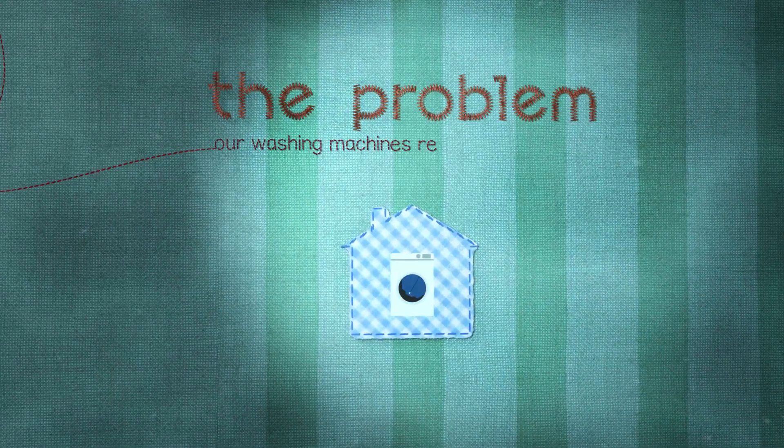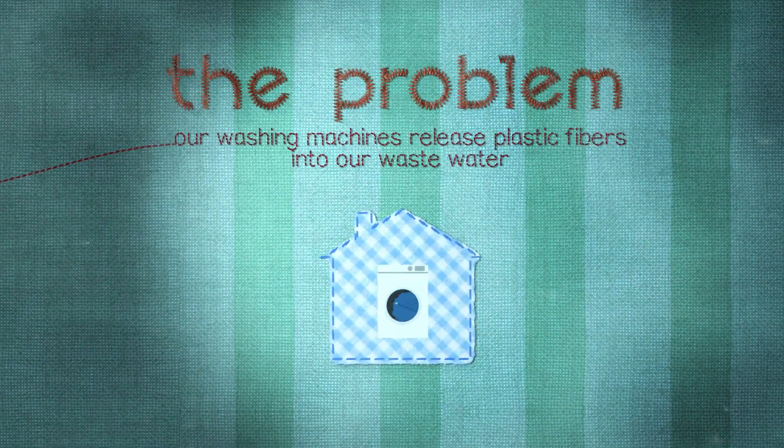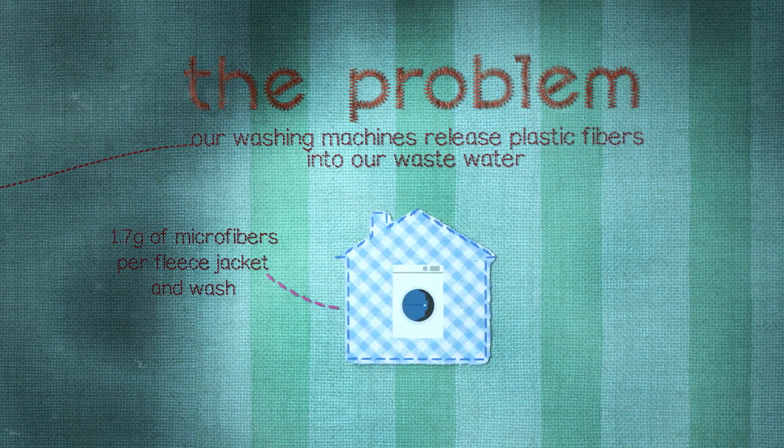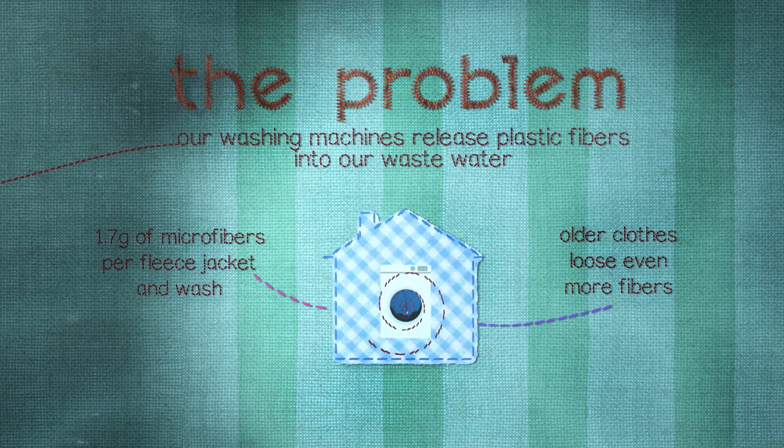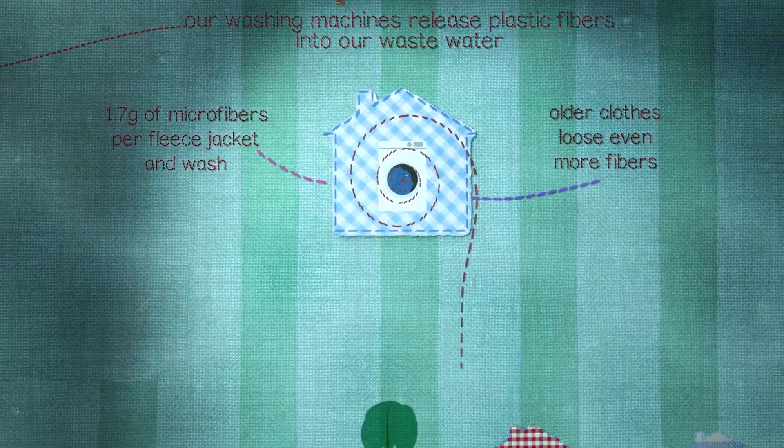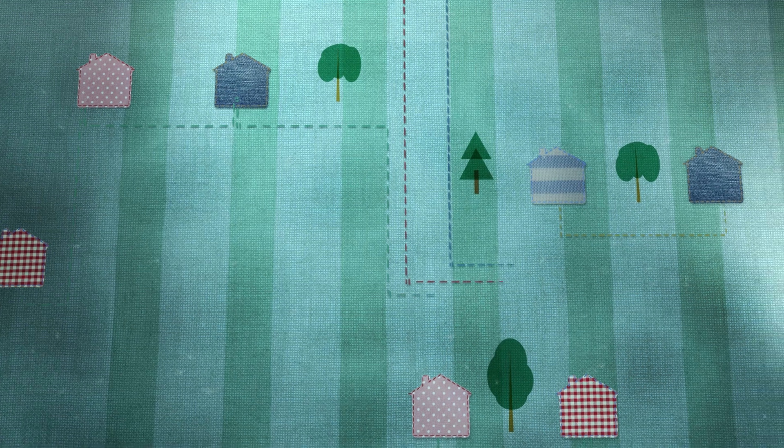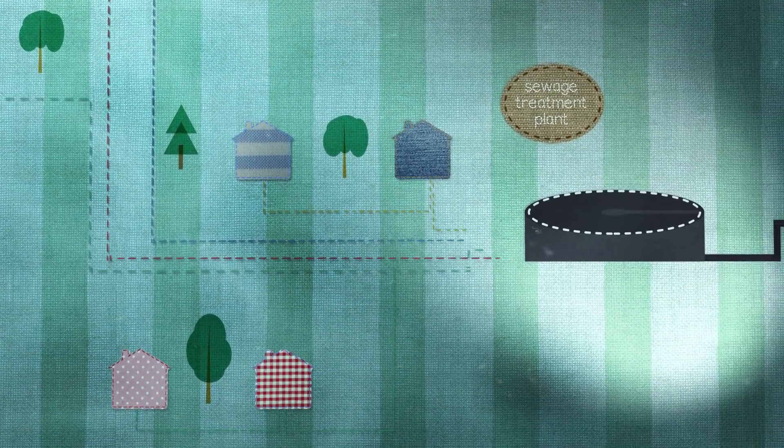The problem? An alarming number of tiny fibers from synthetic fabrics are making their way from washing machines into rivers and oceans. Billions of microfibers from private households, commercial laundries, and industrial companies accumulate to a gigantic amount of plastic.